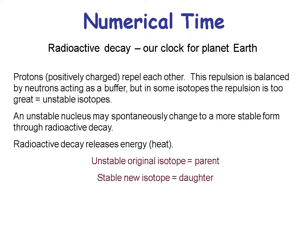Radioactive decay is our clock for planet Earth. Protons repel each other because they're both positively charged, and this repulsion is balanced by neutrons, which act as a buffer between protons. But in some isotopes the repulsion is too great and those are unstable. All unstable isotopes may spontaneously change to a more stable form through radioactive decay, which releases energy or heat.